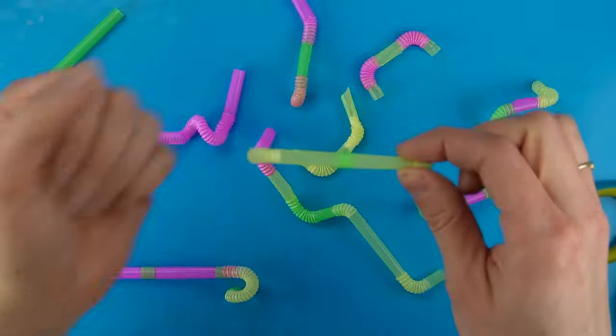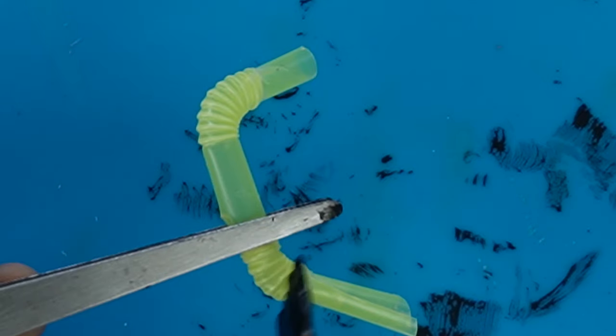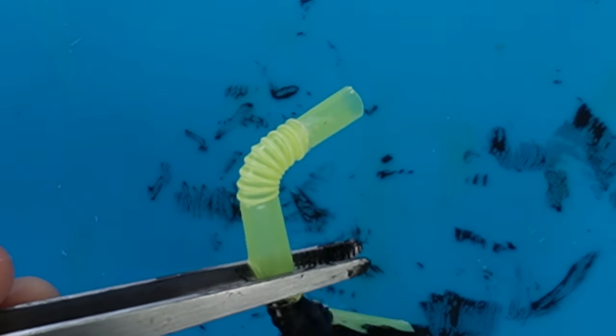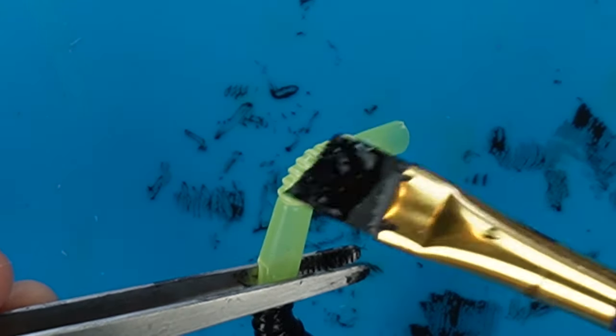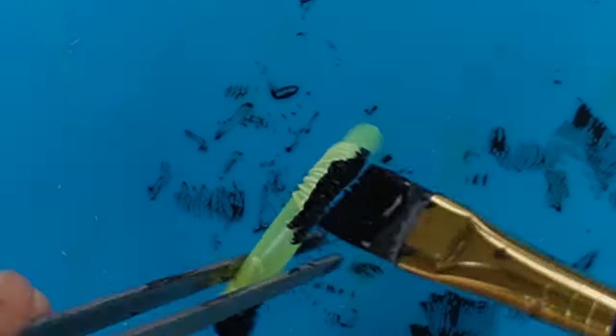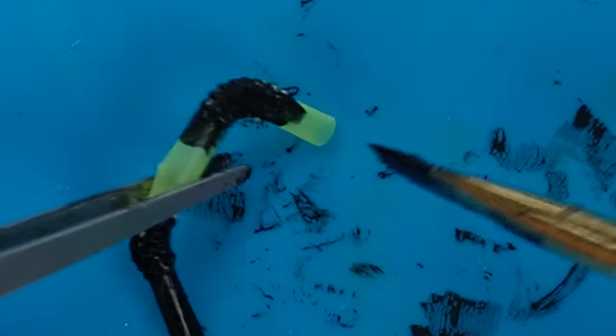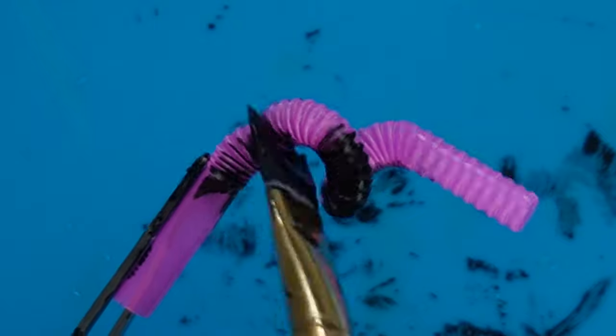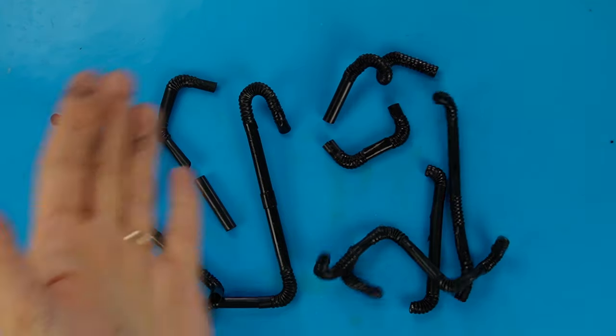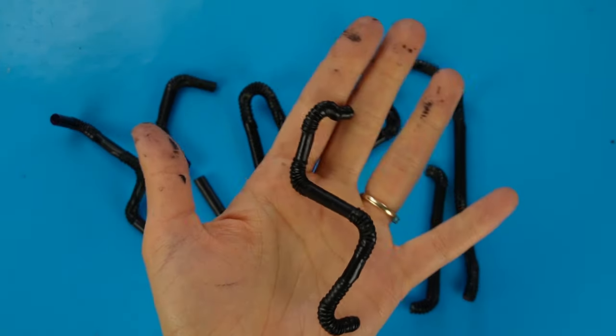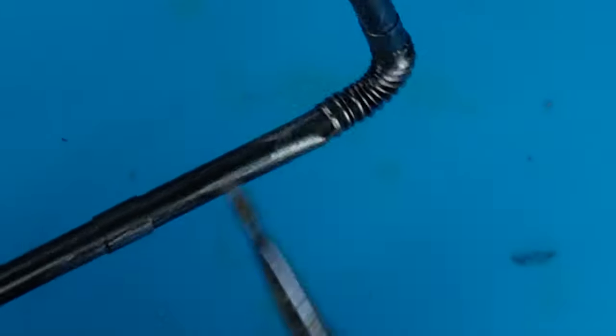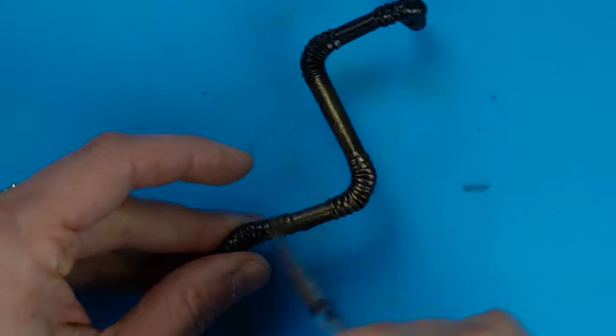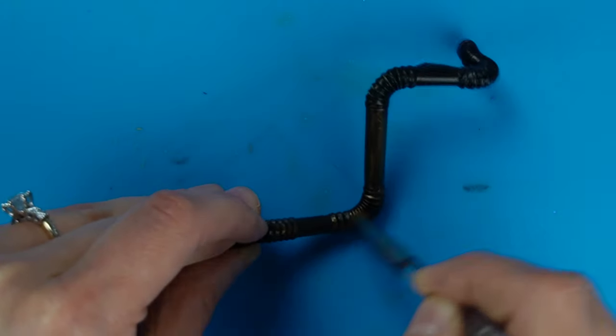This is the point in the video where the YouTuber will usually pull out their airbrush but mine is always hopelessly clogged. So I painted all of my pipes with black paint and a paintbrush. Once the base coat dried I finished off the pipes with the same metallic acrylic paints I used for painting the chimney and the metal panels.